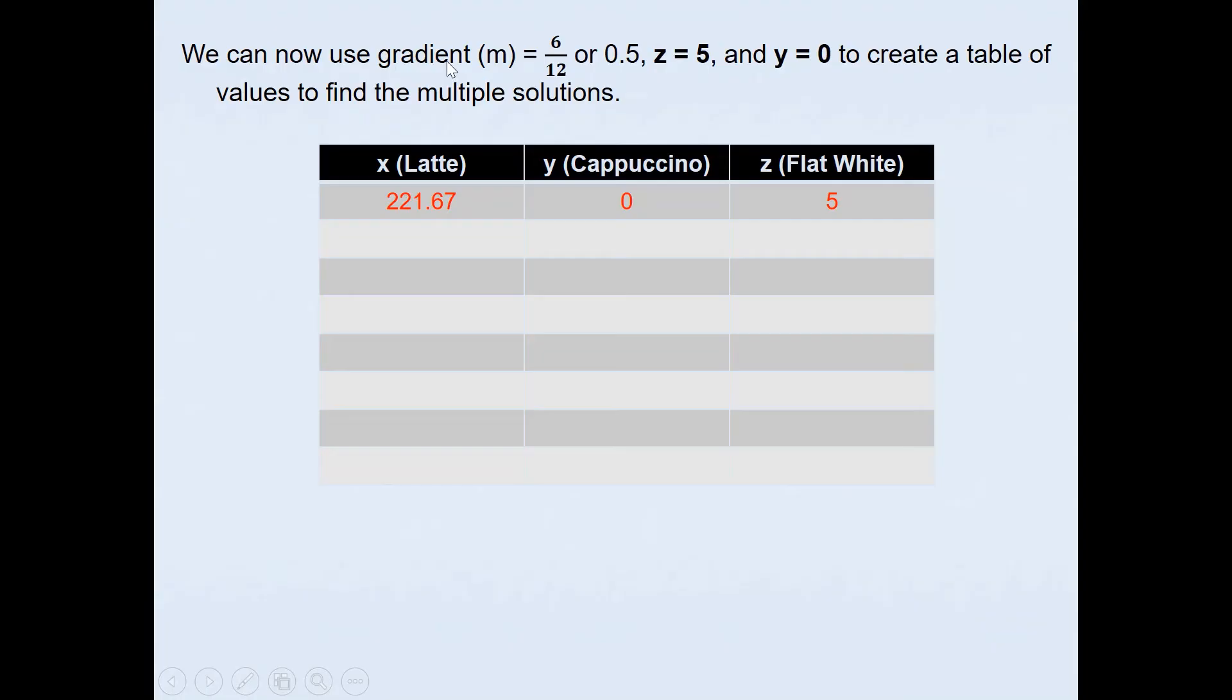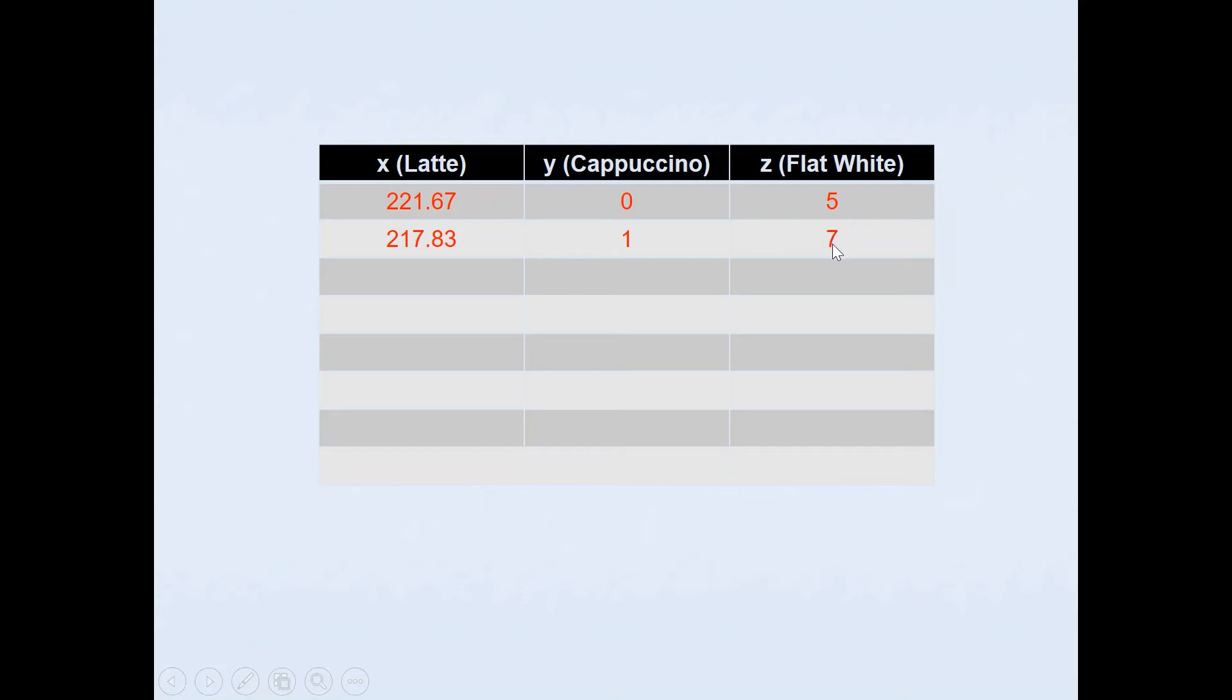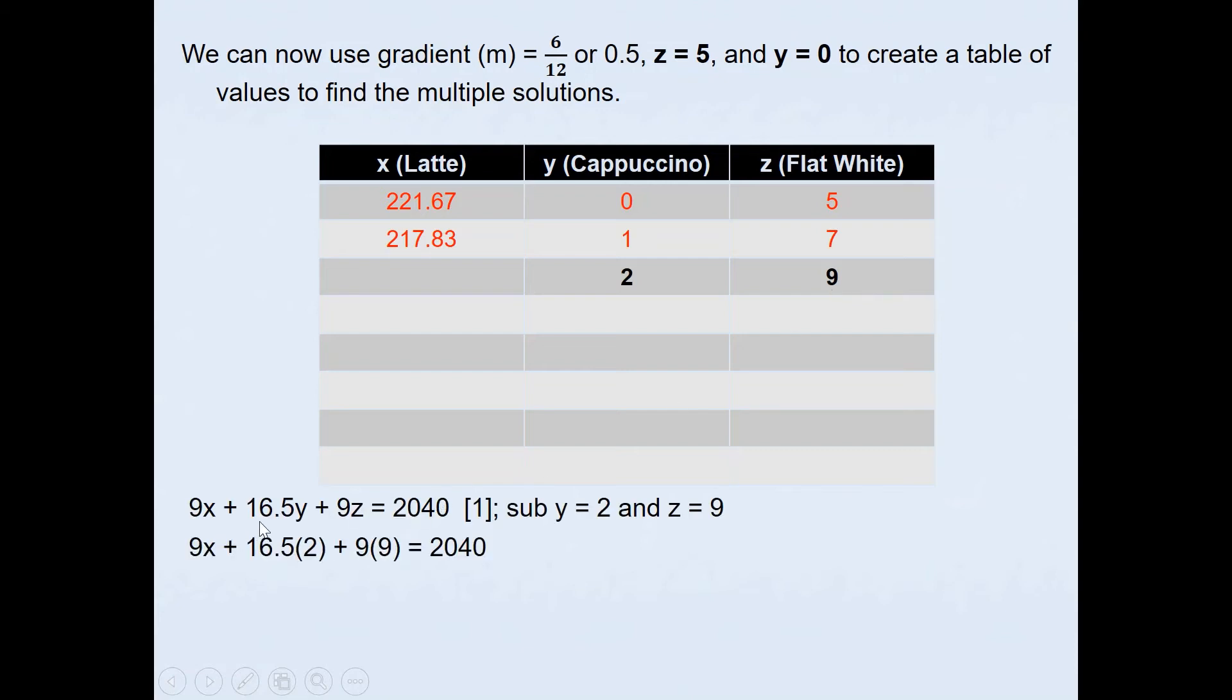Using the gradient of 6/12, which simplifies to 1/2, we can fill in this table. What 1/2 means is if I increase the Y value by 1, the Z value will increase by 2. So if I change those numbers, if Y is 1 and Z value is 7 because 5 + 2 = 7, that's how we got 1/2. If I calculate that using the first equation, it ended up with a decimal number again, so we have to reject this. Then we'll go on to the next one. If I increase the Y value by 1, I must increase the Z value by 2 because our gradient was 1/2. I've got Y value of 2 and Z value of 9.